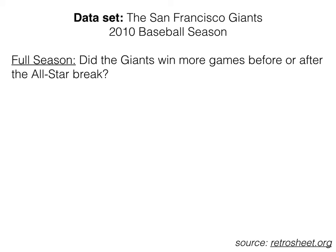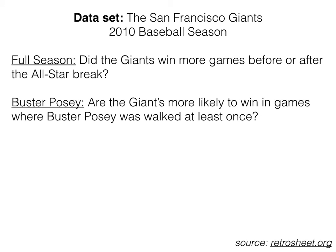The second question we're going to ask looks at data from one specific player, Buster Posey. We want to know, in games where Buster Posey played, were the Giants more likely to win if Posey was walked at least once? If you're unfamiliar with baseball, being walked means the pitcher throws four pitches outside of the zone the batter can hit the ball, and the batter gets to go to first base without actually having to hit the ball.